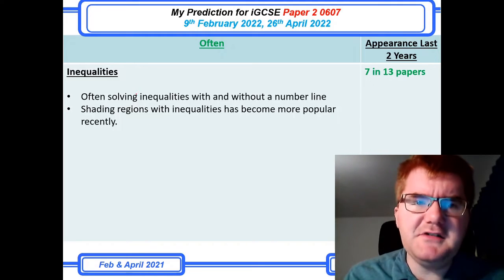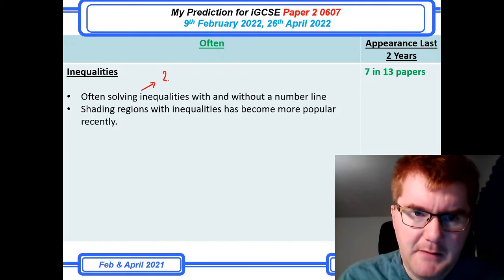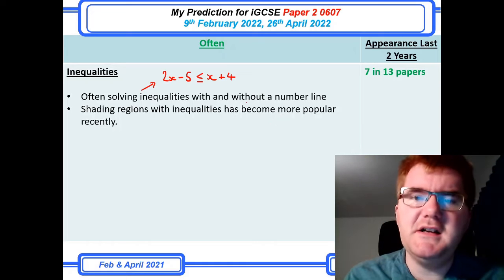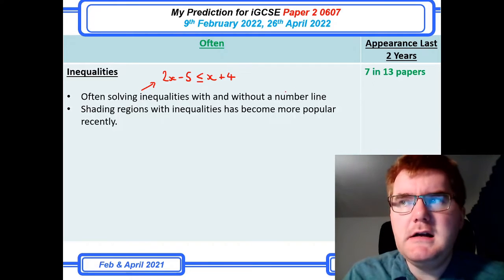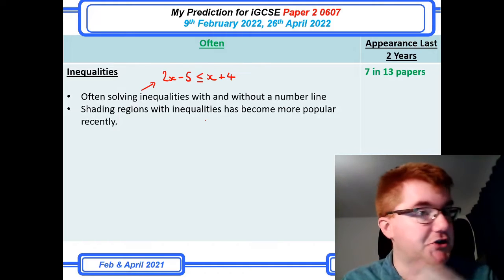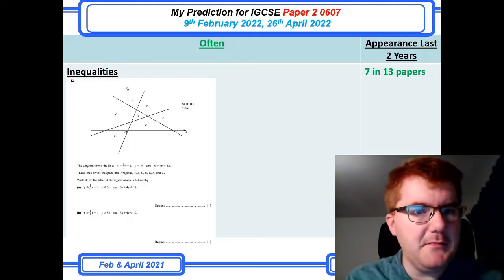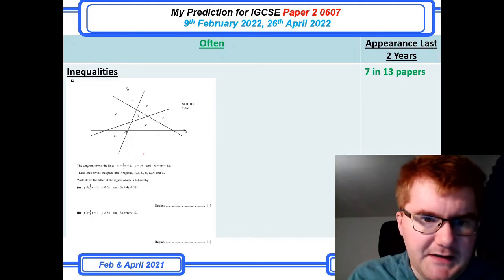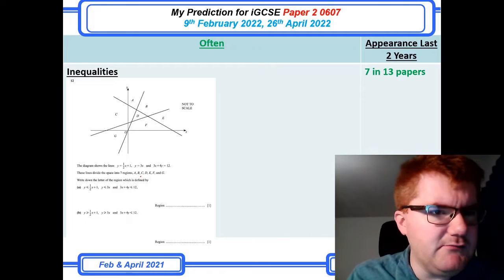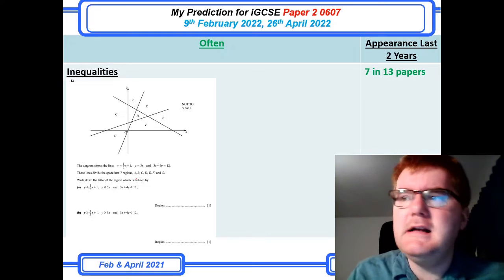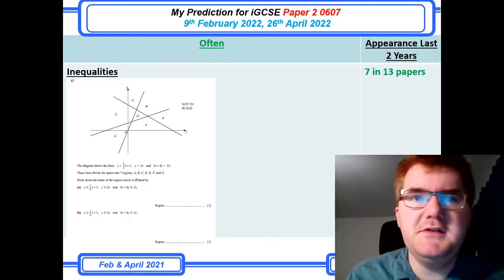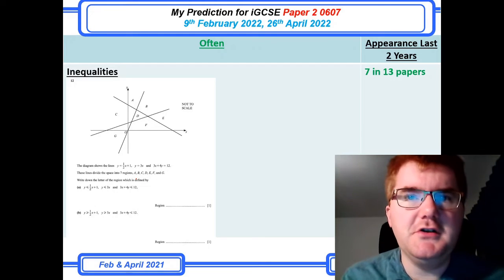Inequalities is my first point — this is often solving an inequality, very similar to an equation. Sometimes they ask you to do this with a number line. Shading regions, which was very popular around 2015–2016, has become more popular recently. They'll give you various lines and ask which inequalities apply to get a particular region. If you're not sure about inequalities, do check out the videos on that topic.